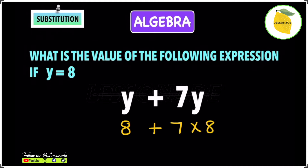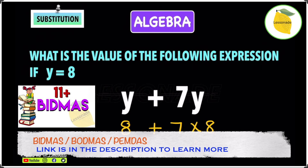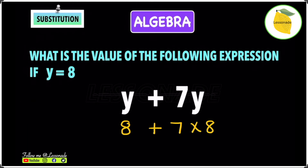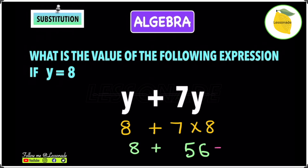Now we have to work this question out: 8 plus 7 times 8. In this case we have to use BIDMAS — if you want to know more about BIDMAS, there's a link in the description below. We have addition and multiplication, and according to BIDMAS multiplication comes first. So 7 times 8 gives you 56, and then 8 plus 56 gives you an answer of 64. So the answer to this question is 64.